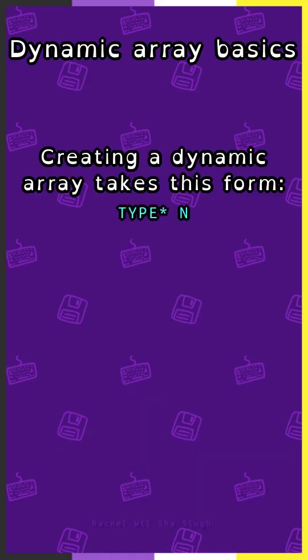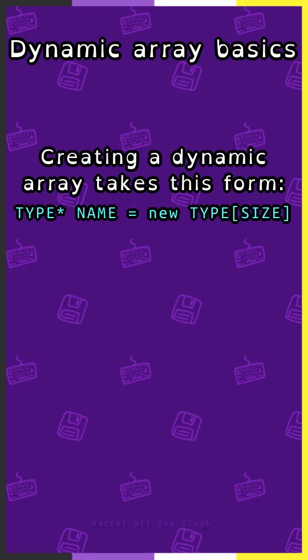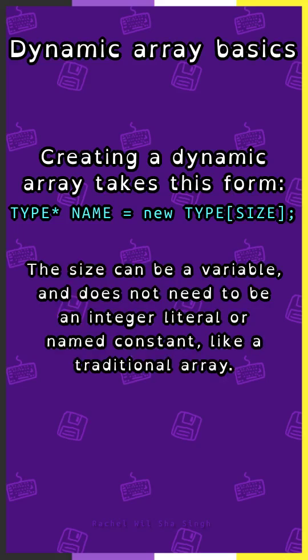Creating a dynamic array takes this form: datatype, asterisk, variable name, equals new, datatype, square brackets, size. The size can be a variable and does not need to be an integer literal or named constant like a traditional array.